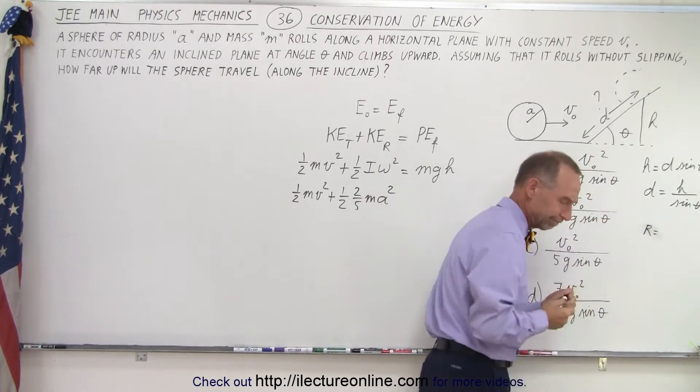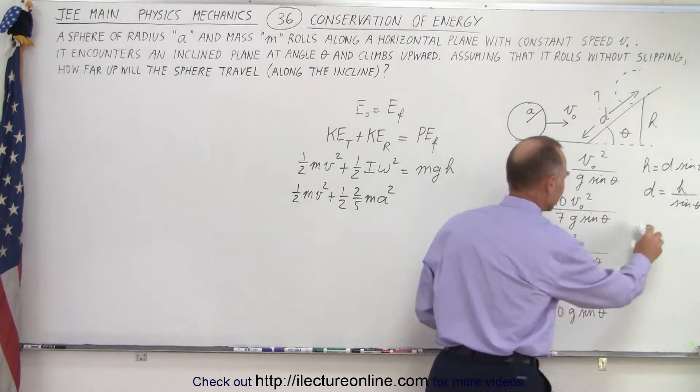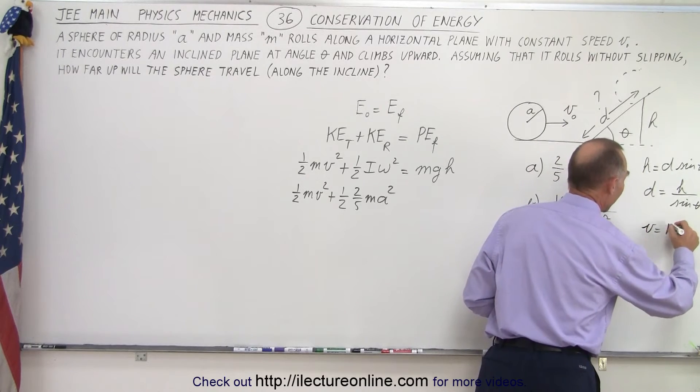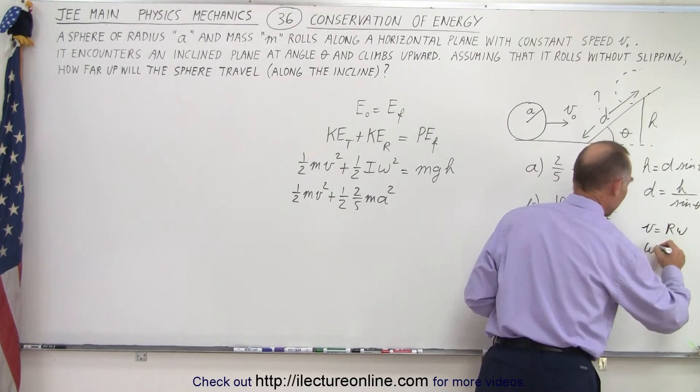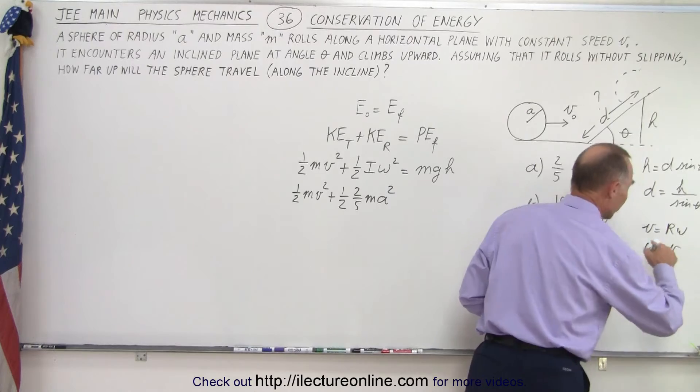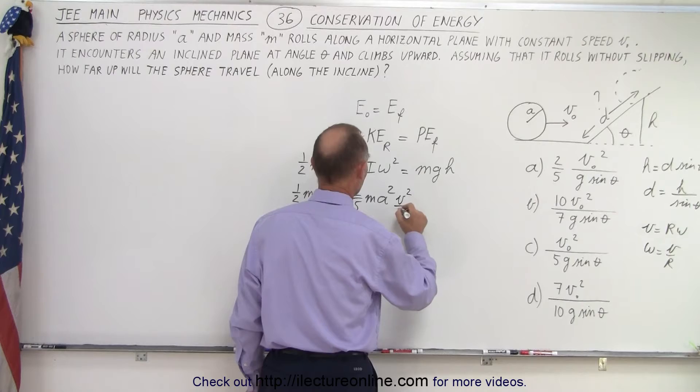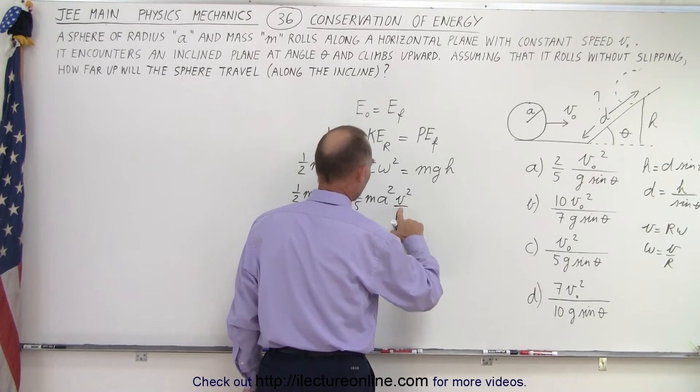Now remember that the velocity is equal to r omega, which means that omega is equal to v over r. So we're going to replace omega by v over r. So that means v squared over r squared. In this case, r is a, so I'll write a squared.